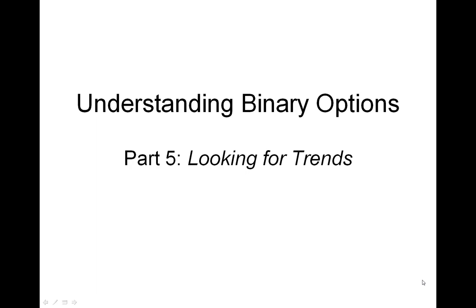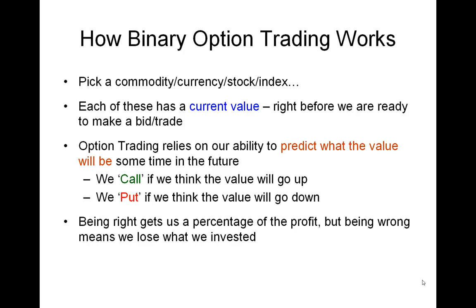Hello everybody and welcome to part 5 of our series on understanding binary options. This particular video deals with a simple strategy where we try and utilize trends in a particular stock or index in order to make well-educated trades. Essentially we pick a commodity, a currency, a stock, or an index — each of these has a current value right now before we're ready to make our trade, and binary option trading relies on our ability to predict what that value is going to be sometime in the future.